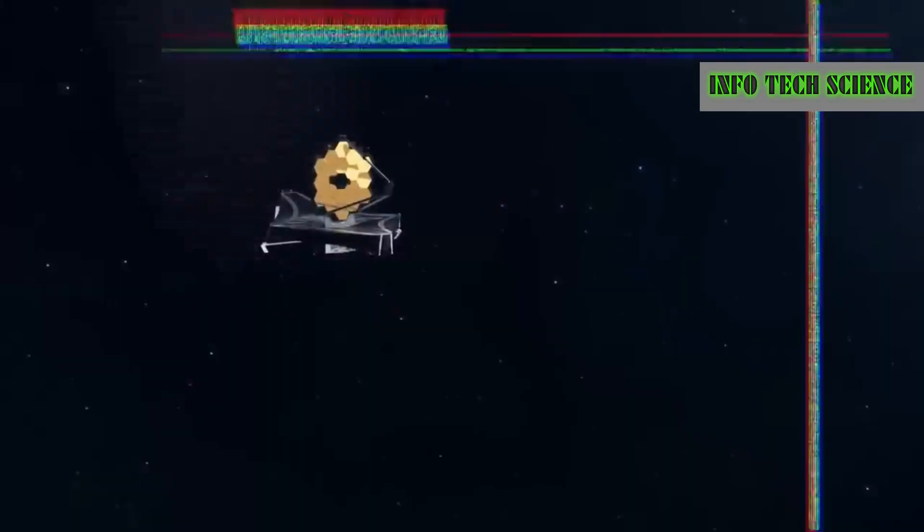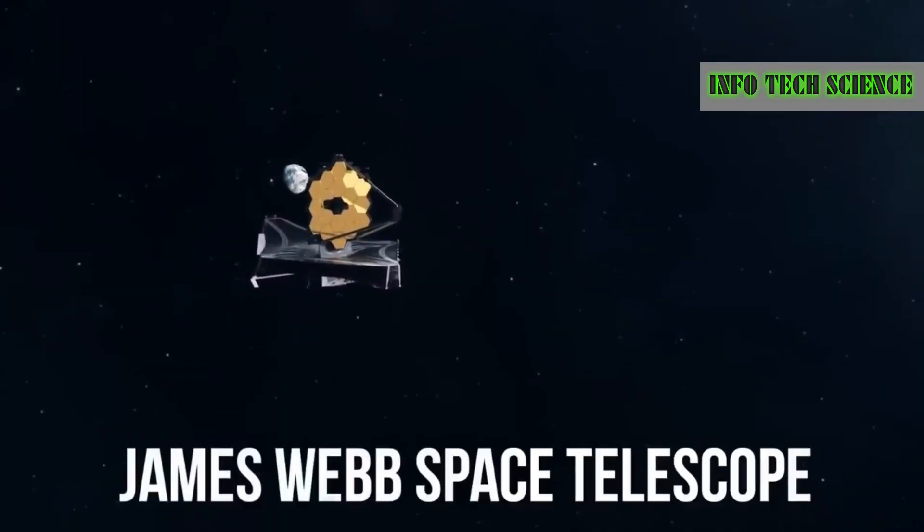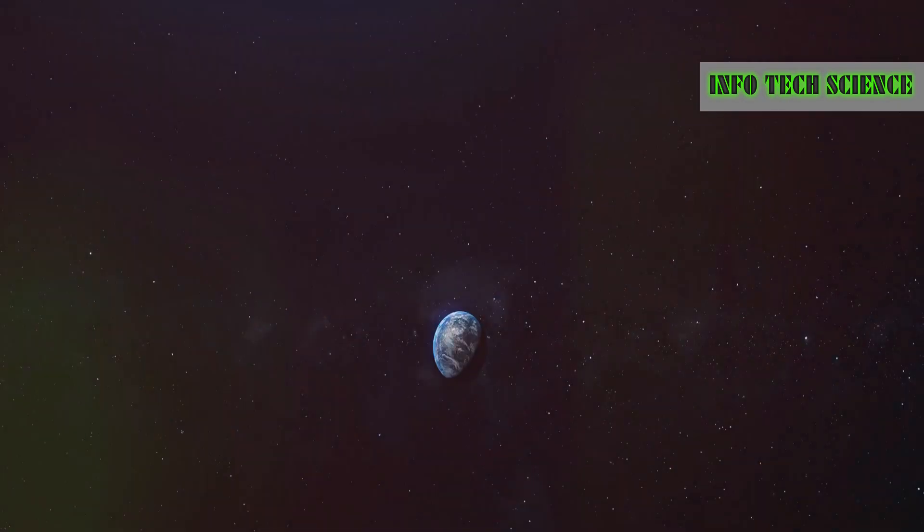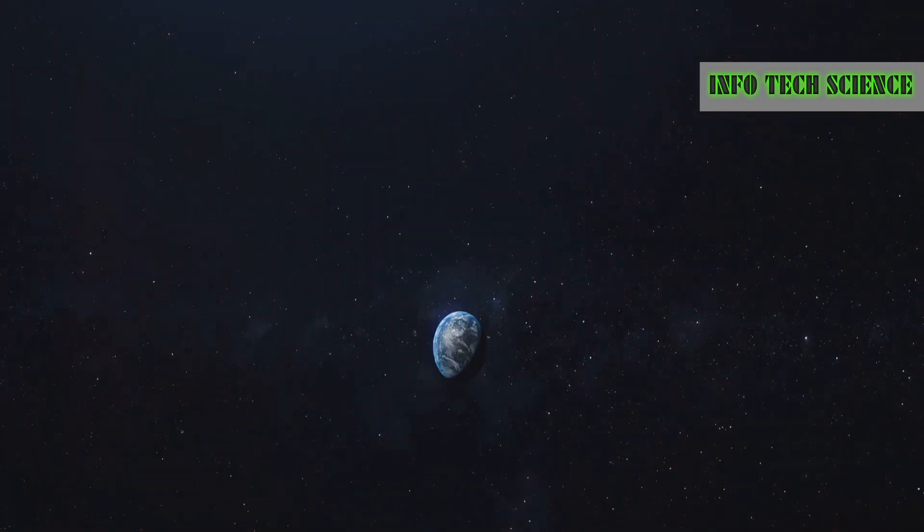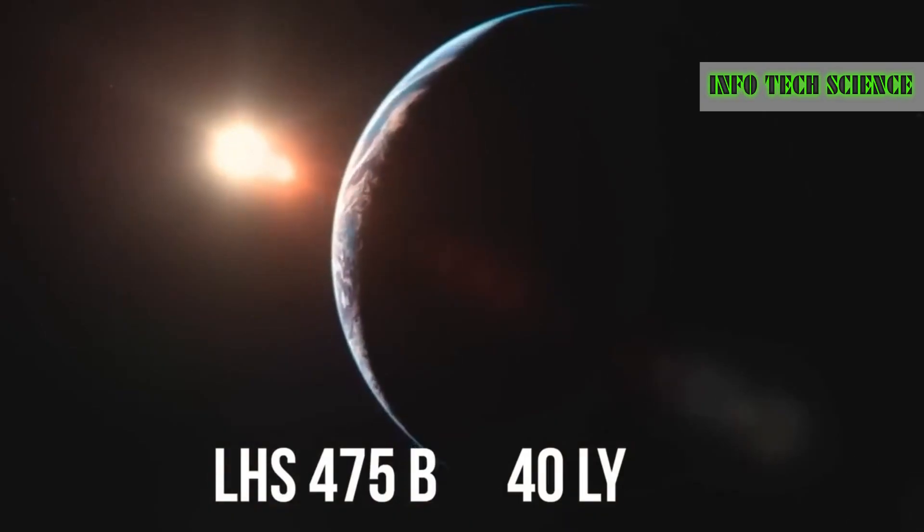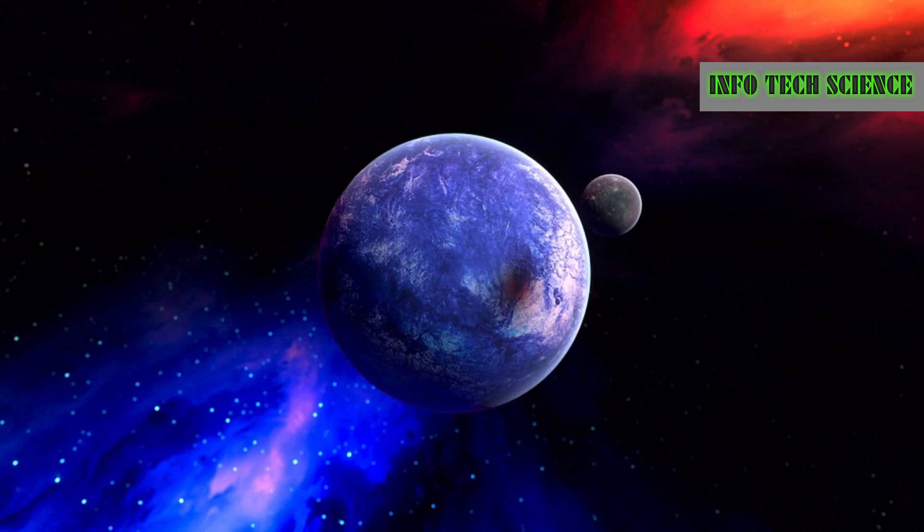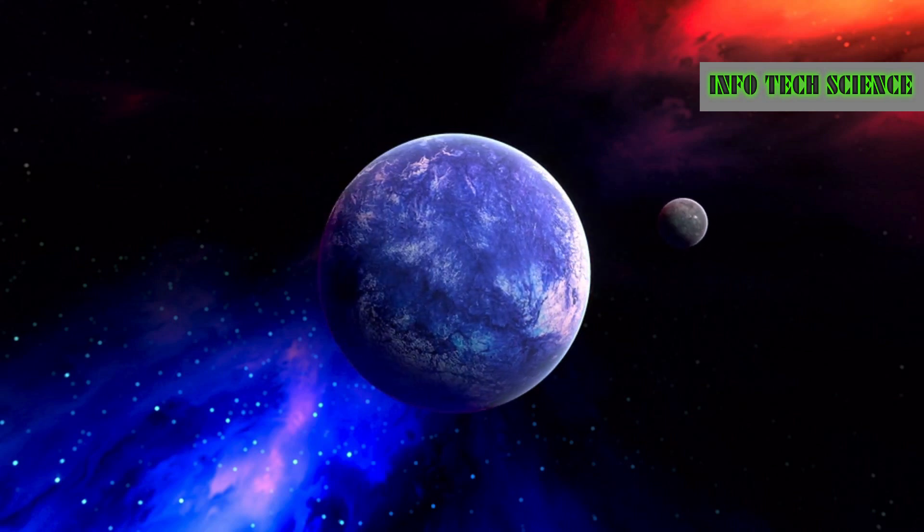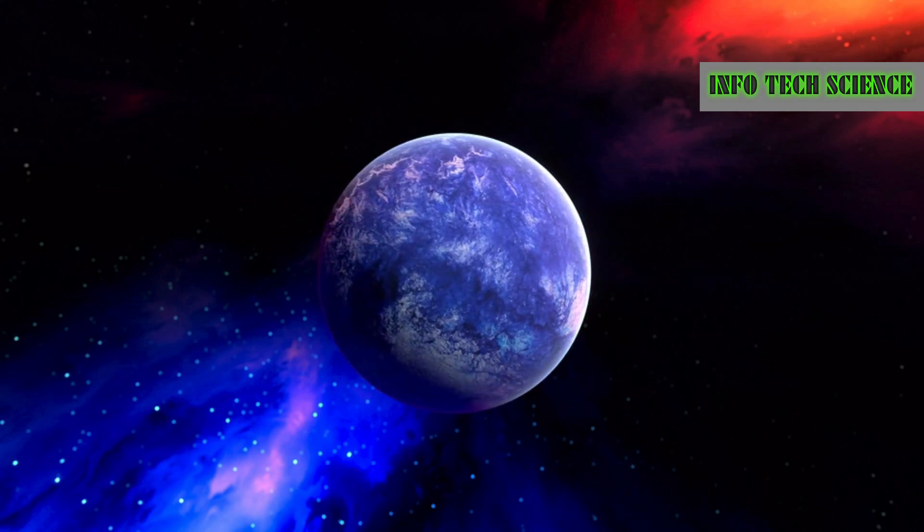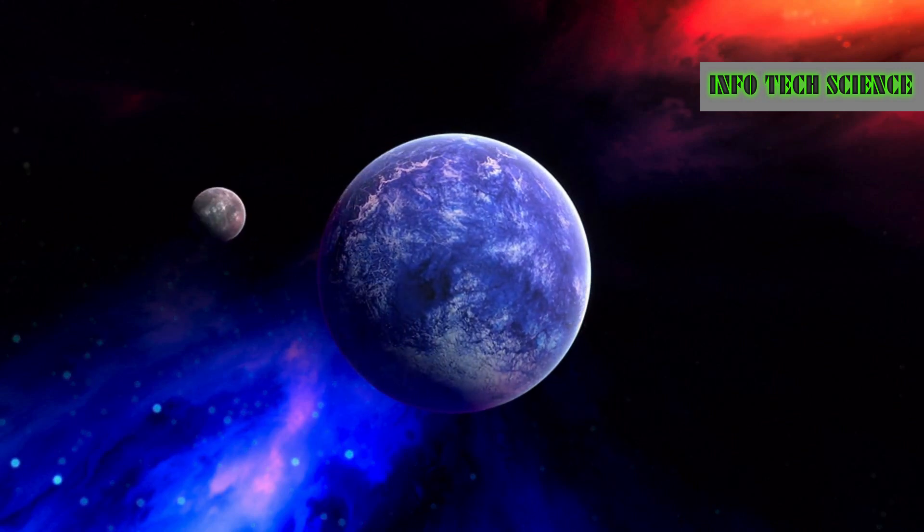With the launch of the James Webb Space Telescope, researchers are discovering more exoplanets. In early 2023, they found LHS 475b, 40 light years away. This planet is special because it's identical in size to Earth, and initial studies show that its atmosphere and temperature may be very similar to ours, suggesting it could potentially replace Earth one day. Thanks for watching the video.